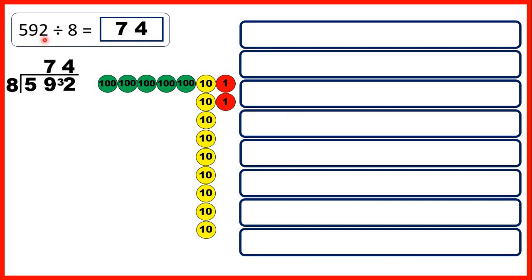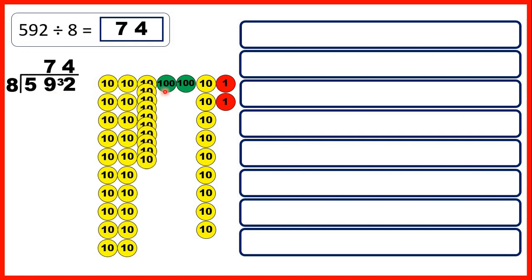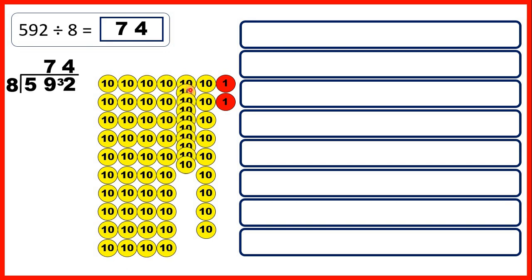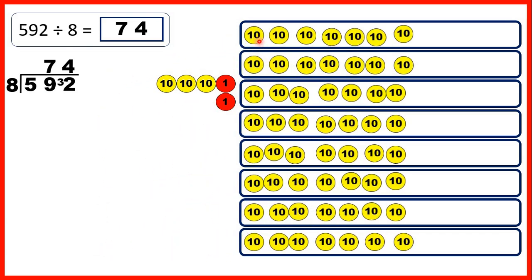Then we had 592 divided by 8, so that's 5 hundreds, 9 tens and 2 ones, and we can share these counters into 8 groups. Again we took the first two digits together because 1 hundred counter has the same value as 10 ten-counters, so now we have 59 tens. We can share out 56 of those tens and we have 7 tens in each group, which is why we have 7 as the tens digit of our answer. But then we have 3 tens that we can't share out, because when we're dividing we need to create equal groups.